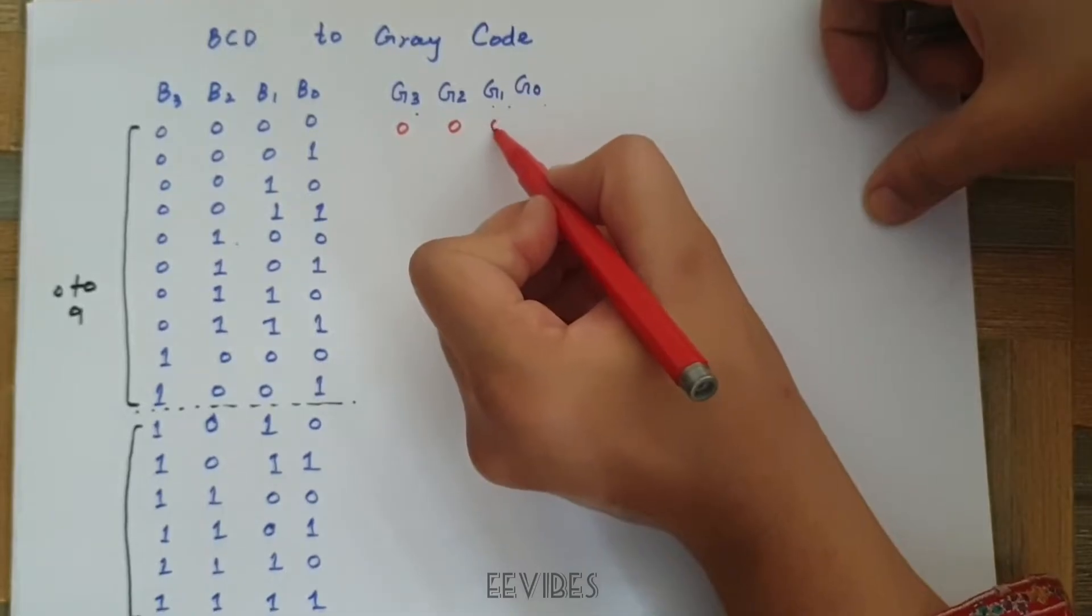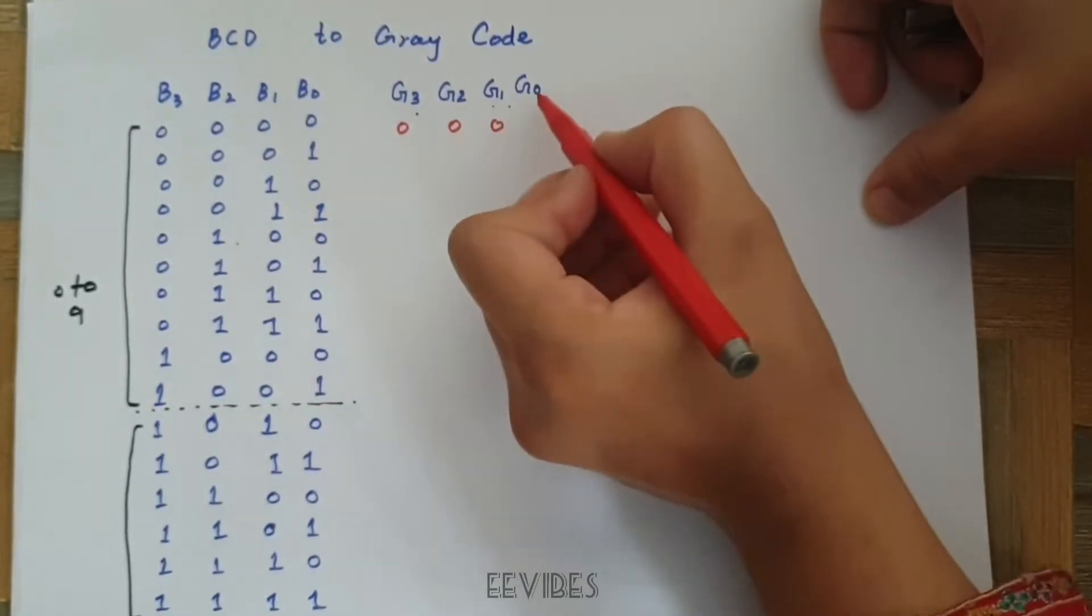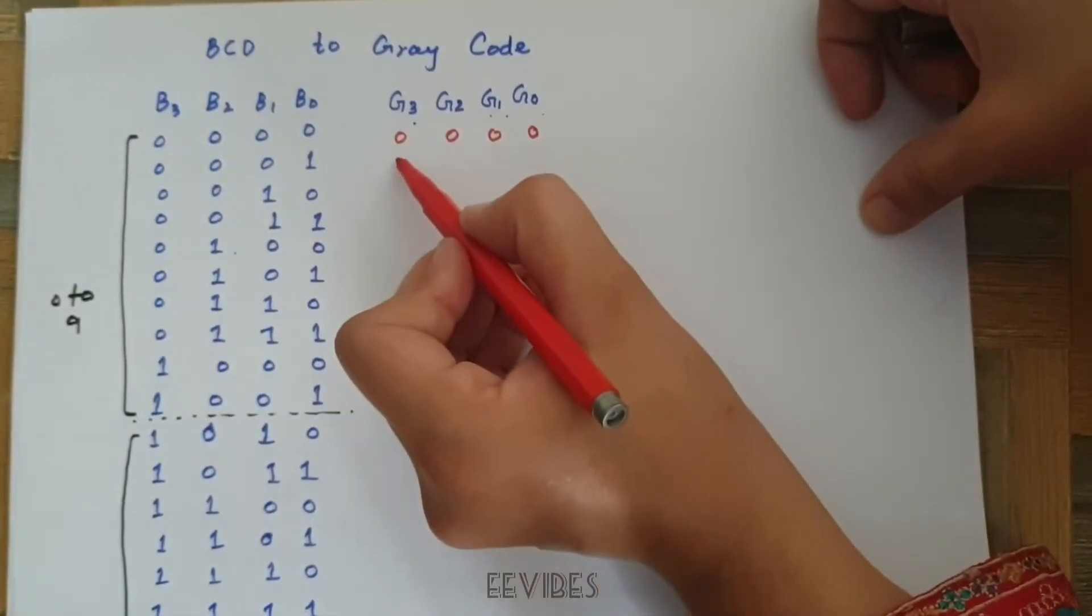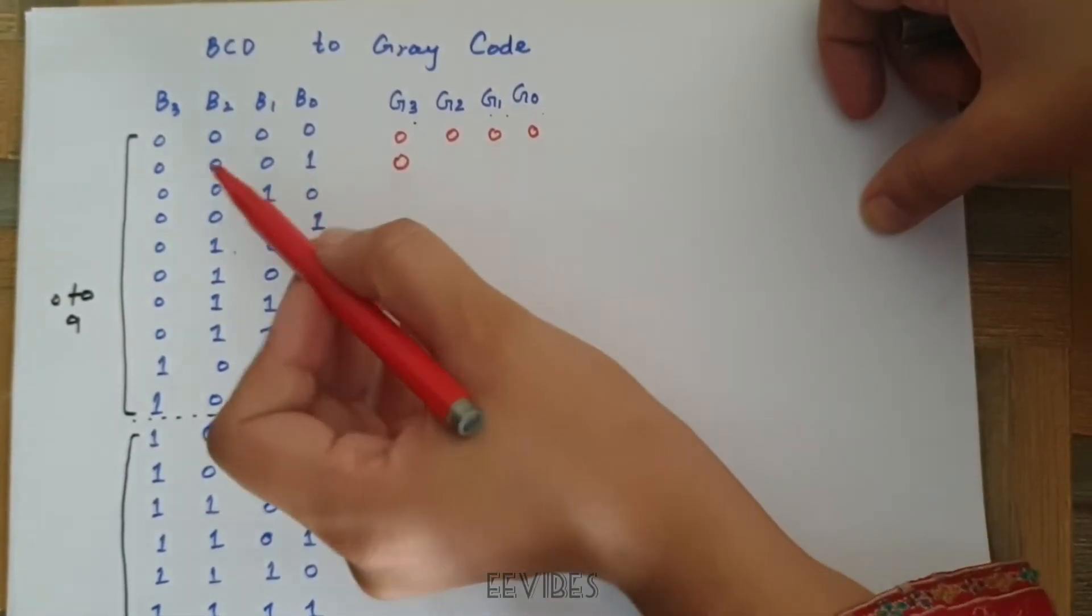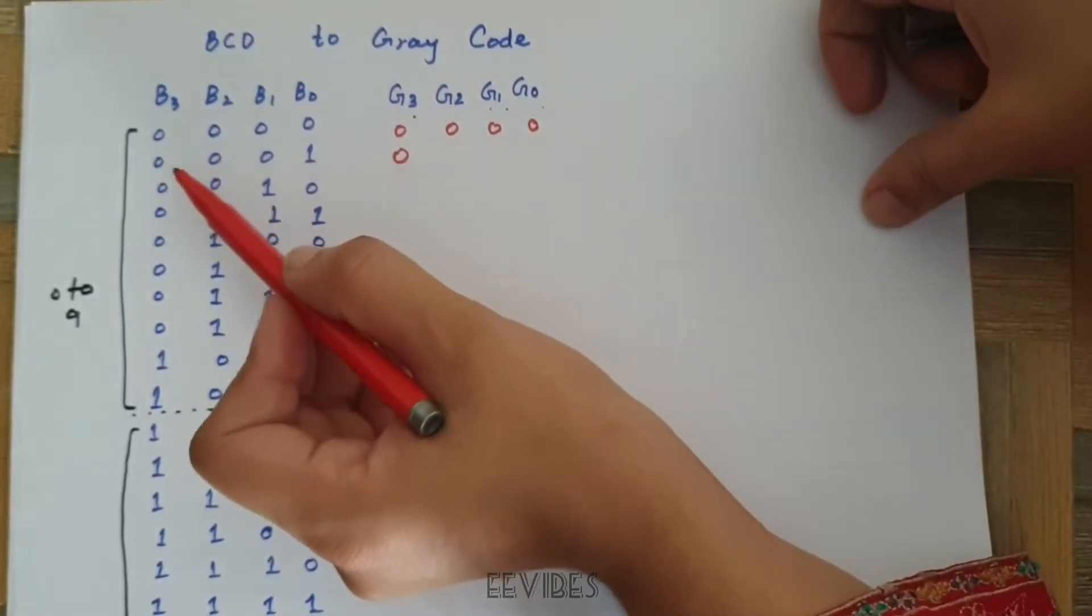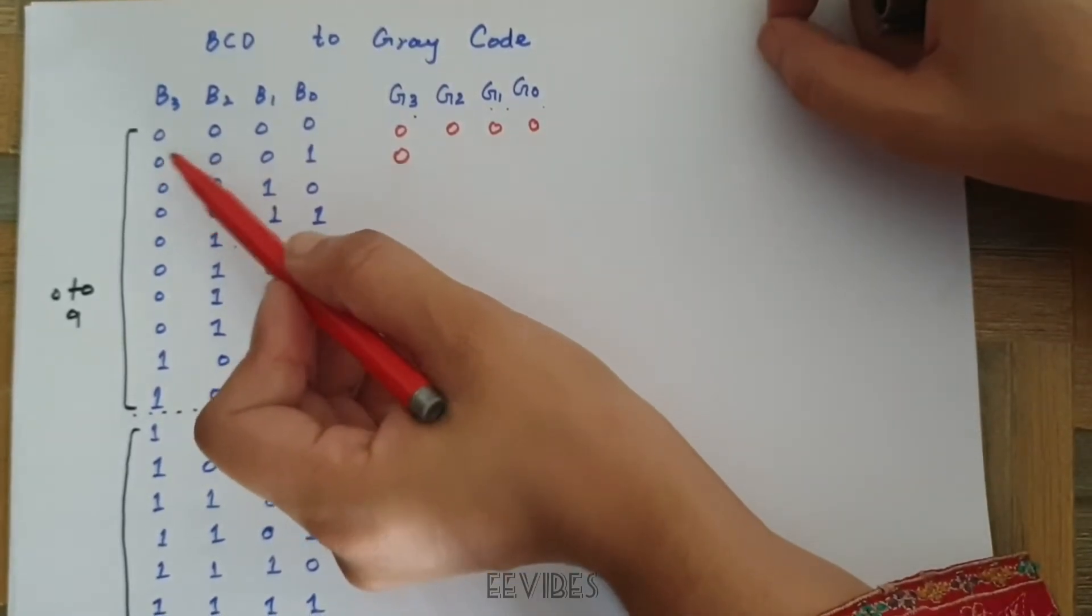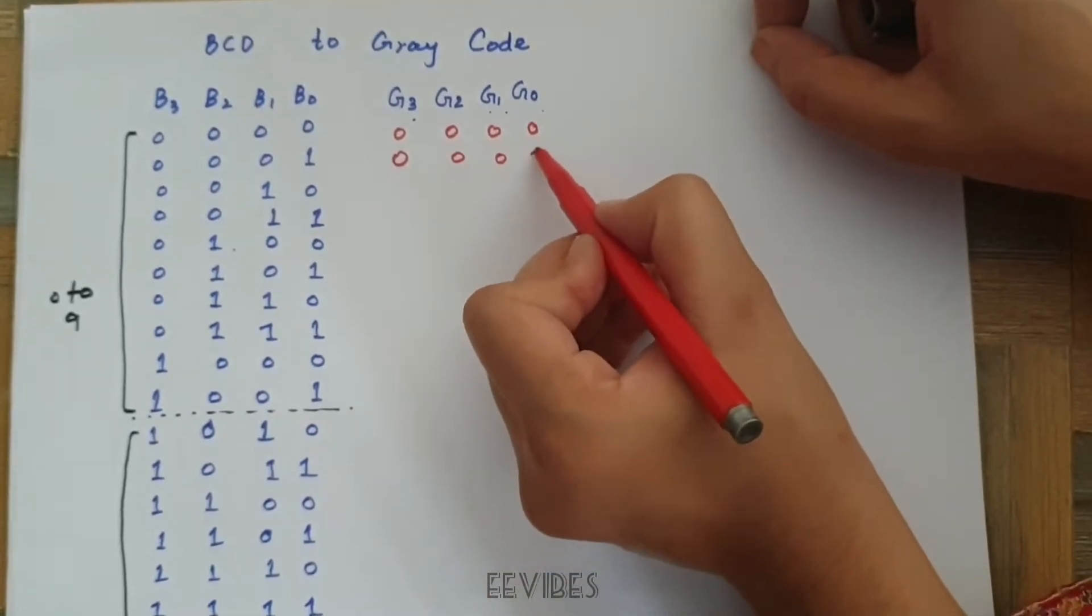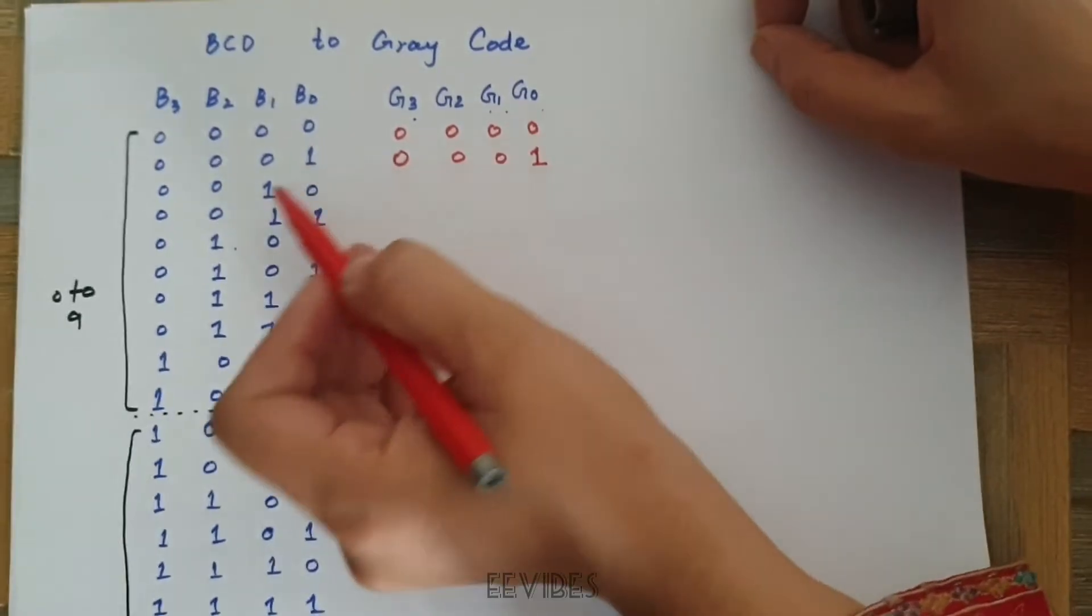These are also same, I will mark 0 and again we will have 0 over here. Similarly, the first bit which is actually the MSB is written as it is, then you compare it to its next bit that is 0, 0 again, then 0, 0 again and 0, 1 are different, that's why you will mark it by 1.